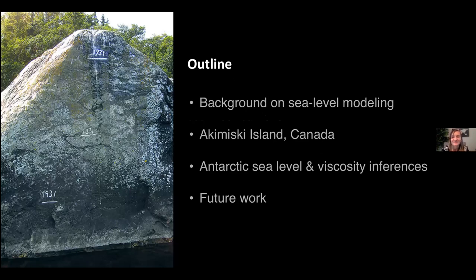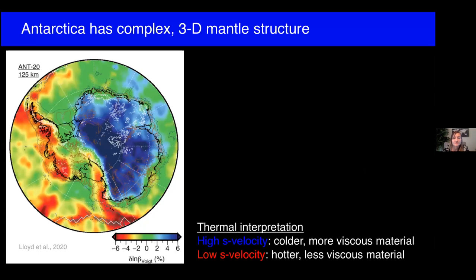Let's move on to our second case study, switching hemispheres and looking at sea level predictions in Antarctica. For Antarctica, regional seismic tomographic models are providing unprecedented images of upper mantle structure. This plot from Andrew Lloyd's recent adjoint-based work shows variations in seismic wave speed at 125 kilometers depth. You can see a clear dichotomy between east and west Antarctica. The cratonic East Antarctic is characterized by faster wave speeds, whereas in the west, this failed rift system is evidenced by a thin lithosphere underlain by an inferred thermal upwelling. There is hotter, less viscous material underlying the West Antarctic ice sheet.